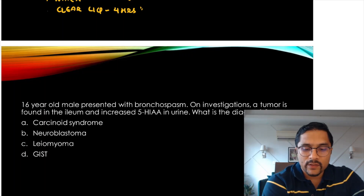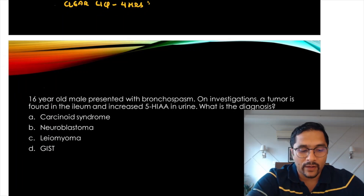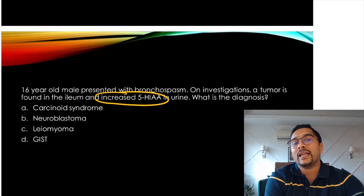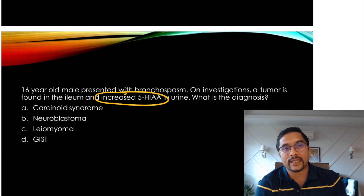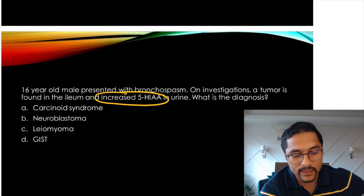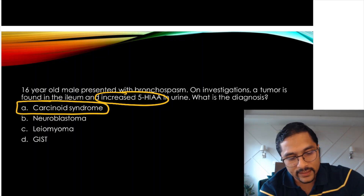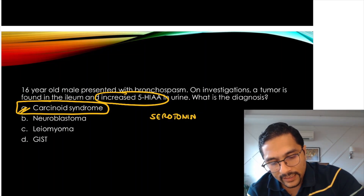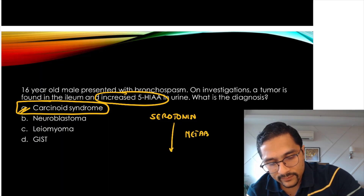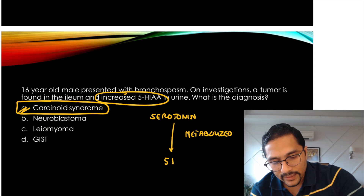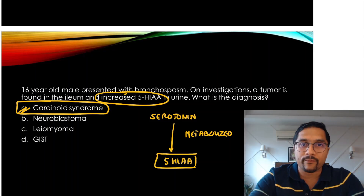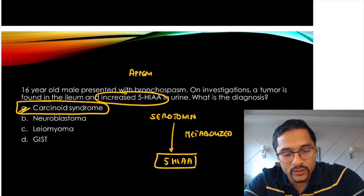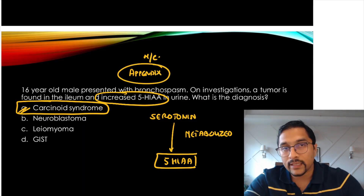A 16-year-old male comes with bronchospasm; a tumor is found in the ileum with increased urinary 5-HIAA — 5-hydroxyindolacetic acid. The diagnosis is carcinoid syndrome. In carcinoid syndrome, serotonin is released and once metabolized, it comes out as 5-HIAA in the urine. The most common site for carcinoid tumors is the appendix.